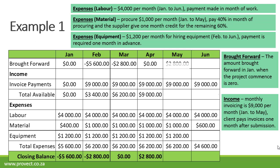Brought forward in May is $2,800 plus $9,000 invoice payments — total available is $11,800, minus $6,200 expenses = $5,600. Brought forward in June is $5,600 plus $9,000 invoice payments — total available is $14,600, minus $4,600 expenses. Our closing balance in June is positive $10,000, which means that this project will make a profit.